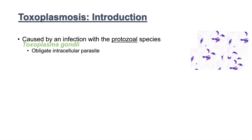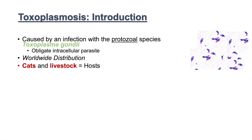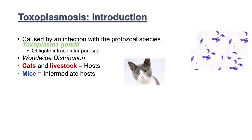Toxoplasma gondii has a worldwide distribution. Cats and livestock act as hosts for this protozoa, and mice act as intermediate hosts.